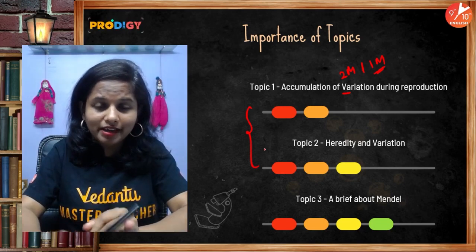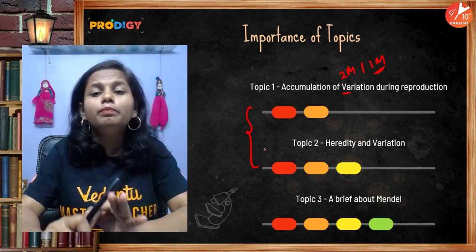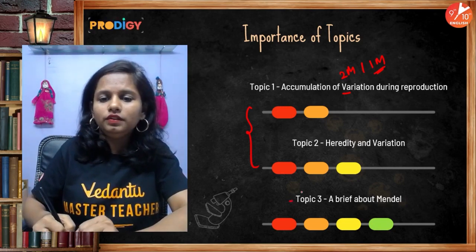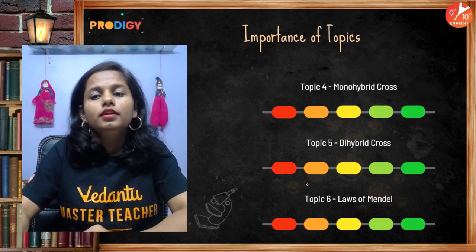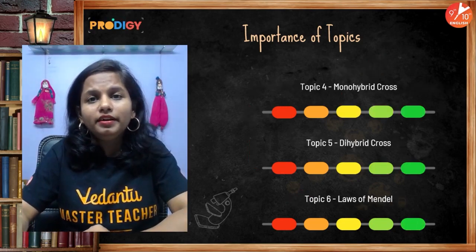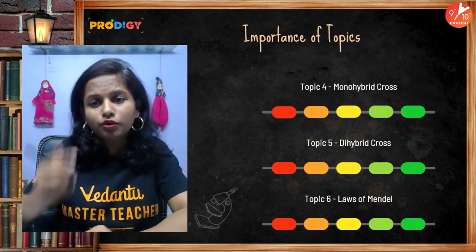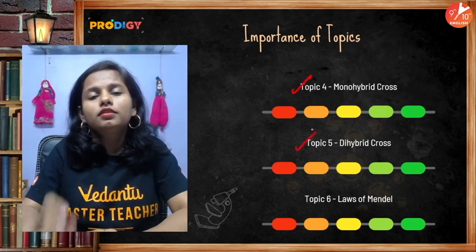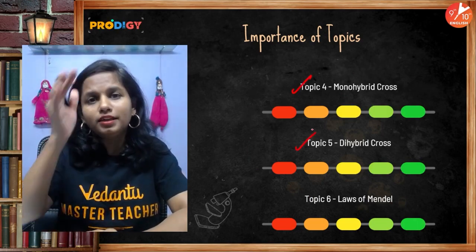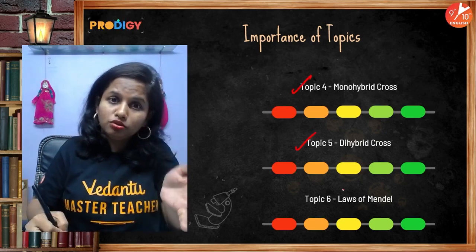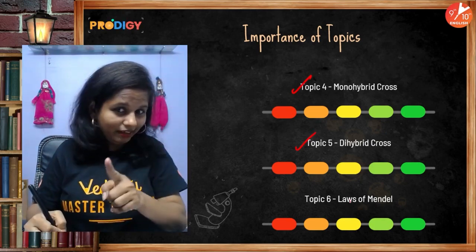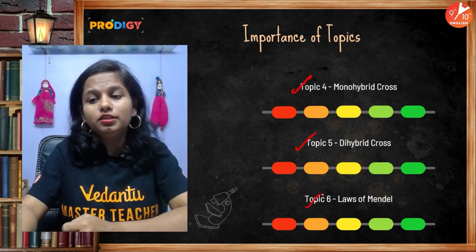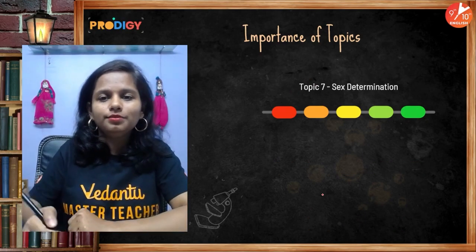Key areas include why Mendel chose the pea plant, the seven contrasting characters, and important terms related to genetics. Monohybrid and dihybrid cross — expect a short-answer question from these topics. The three laws of Mendel — expect indirect short-answer questions where you don't need to directly state the law.